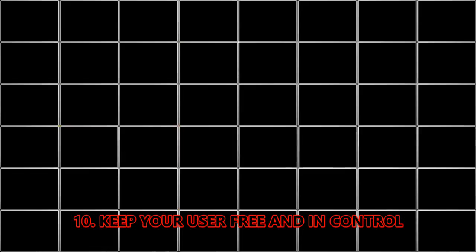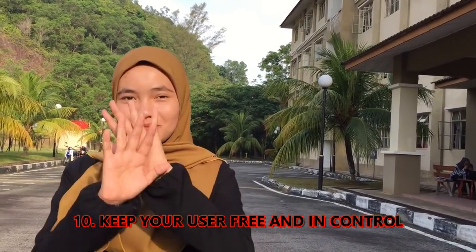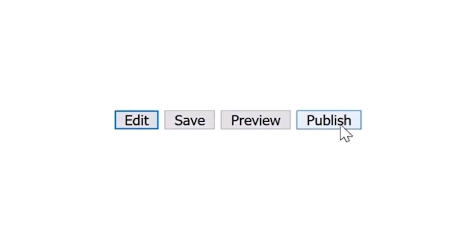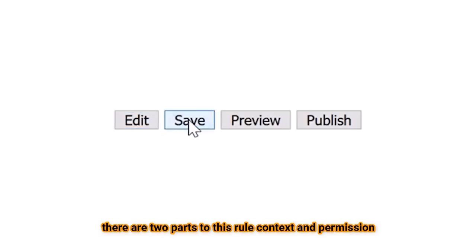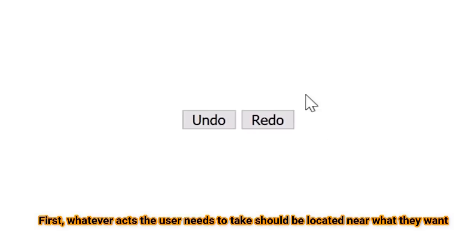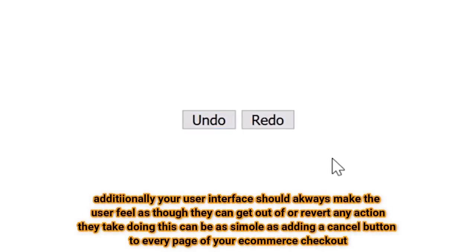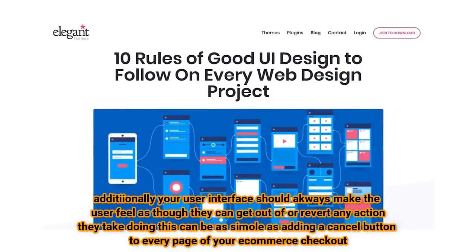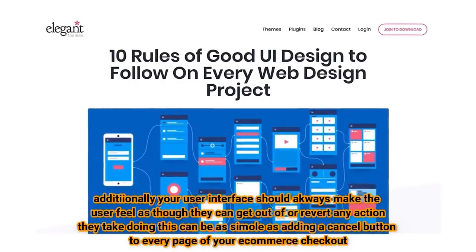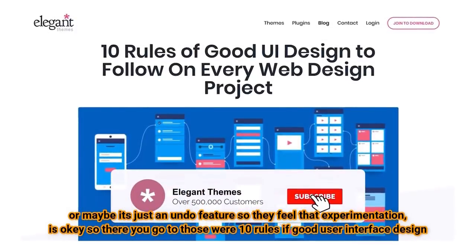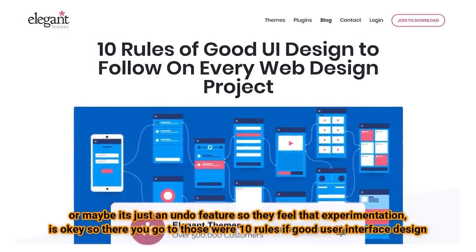Nine, keep it simple. The last thing you want to do with your user interface is to make users feel confined or restricted by the design. There are two parts to this rule: context and permission. Whatever action the user needs to take should be located near what they want to act on. If they need to edit a post, the edit button should be near the save, publish, submit, and preview buttons. Additionally, your user interface should always make the user feel as though they can get out of or revert any action they take. This can be as simple as adding a cancel button to every page of your e-commerce checkout, or an undo feature so they feel experimentation is okay. So there you go — those were the rules of good user interface design.